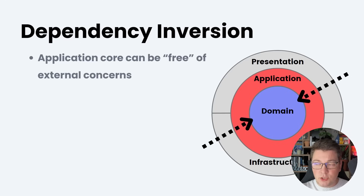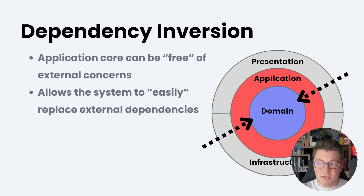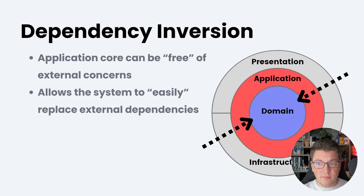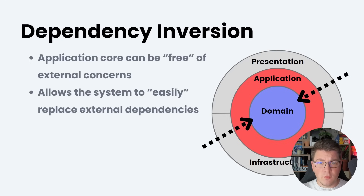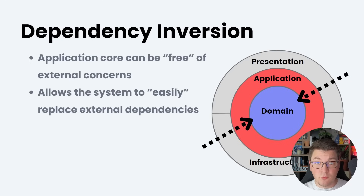Although to which degree you will be able to implement this depends on how good your abstractions are and how much of the external concerns you want to abstract in the first place. This should allow you to easily — again quote-unquote — replace external dependencies. It's not that simple to replace all external dependencies. For example, going from one database system to another is a very big undertaking, but replacing an email notification service like switching from MailChimp to something else is not nearly as difficult. So not all abstractions are created equal, and not all external dependencies are so easily replaced.